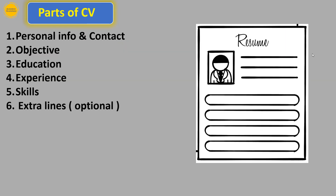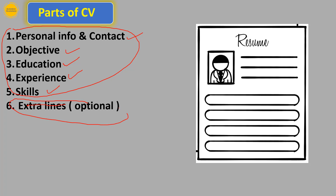How should we design a CV? A CV is made up of five parts: personal information and contact, objective, education, experience, and skills. There is also an optional extra section, but mostly a CV has these five parts.